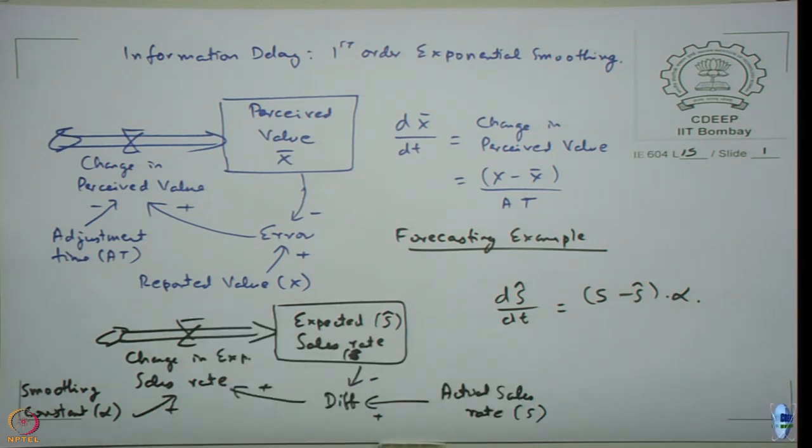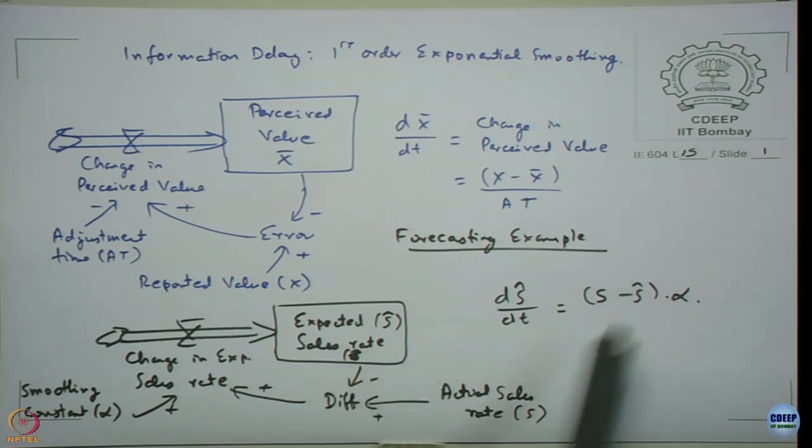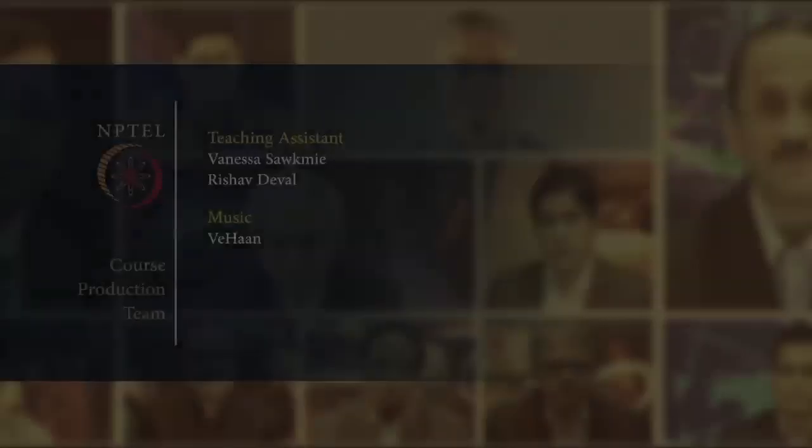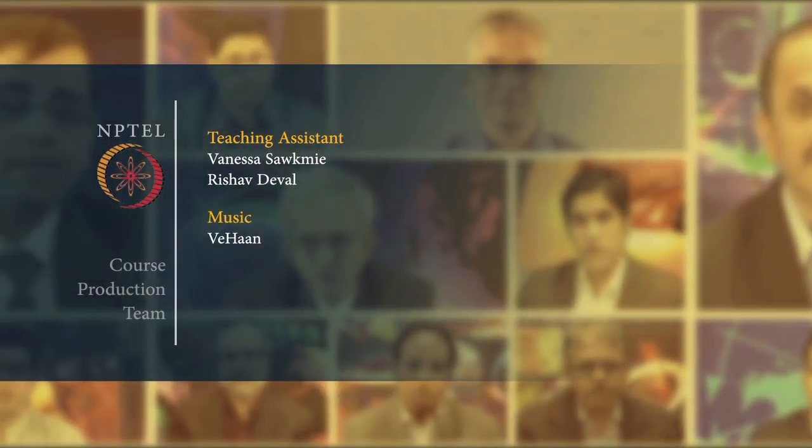So that is what this model is going to do. Initially S and S star are equal at 100. Now if S becomes 120, then 120 minus 100, that is 20 units. So I have to adjust for 20 units—my expected sales rate has to increase towards the actual sales rate. So this is actual information that is happening, this is what I expect it to be. So I want it to become as close to the actual sales as possible.